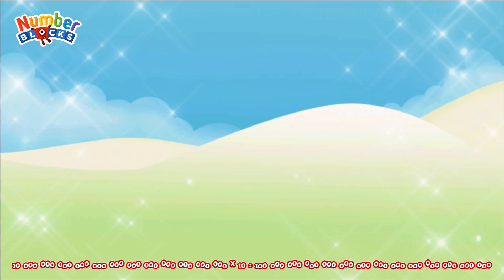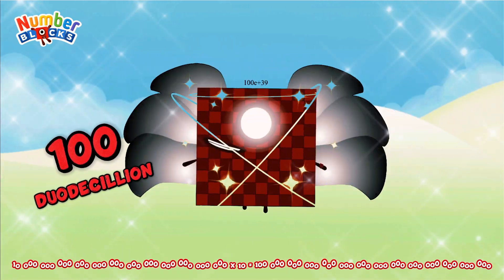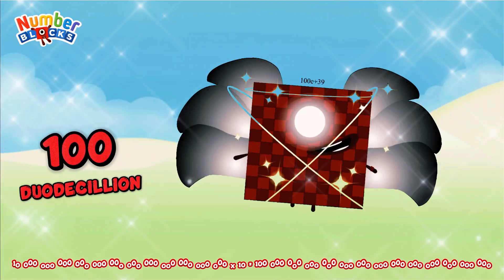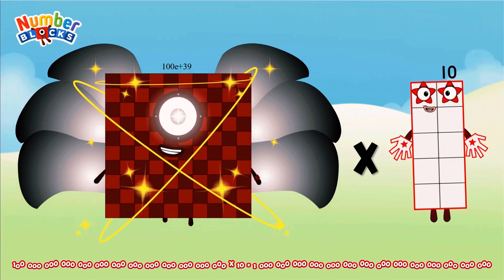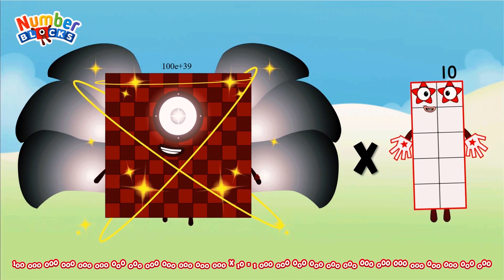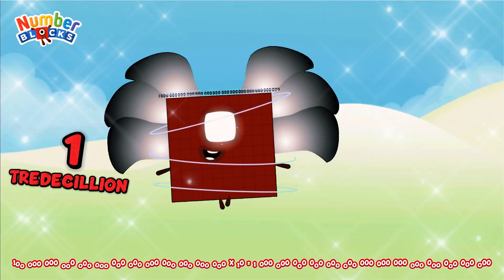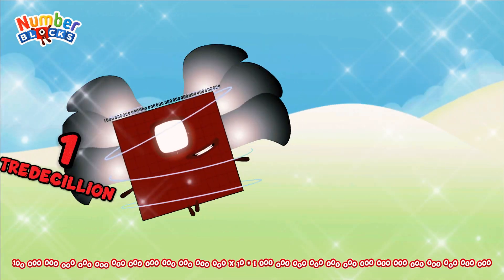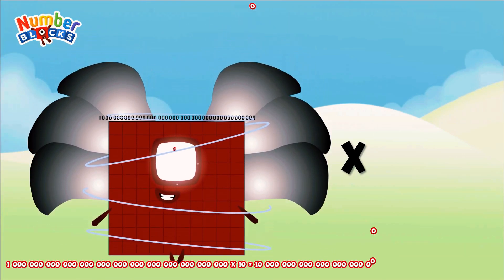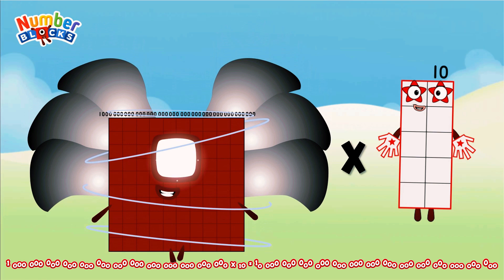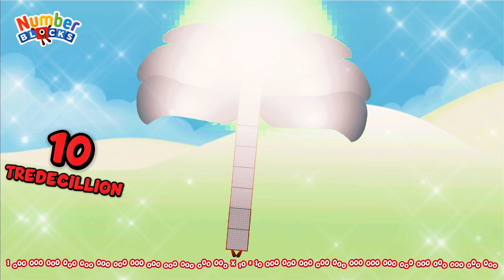100 duodecillion multiplied by 10 equals 1 duodecillion. 1 duodecillion multiplied by 10 equals 100 duodecillion.